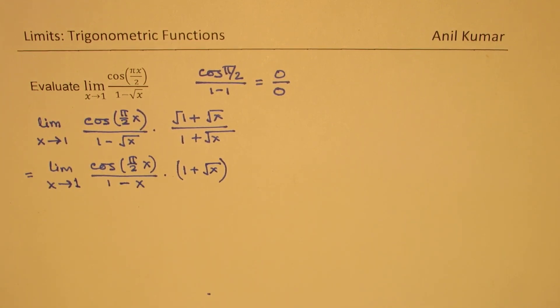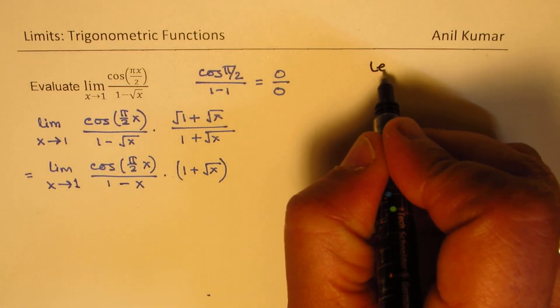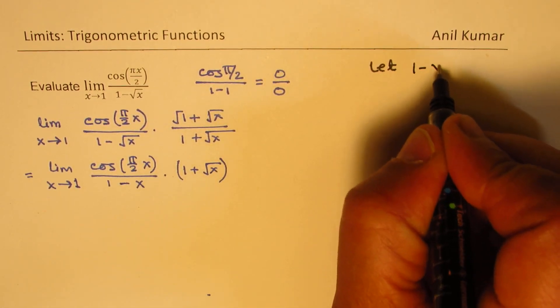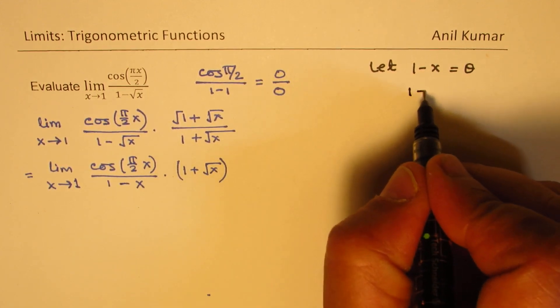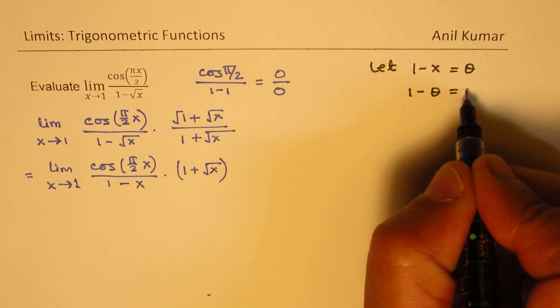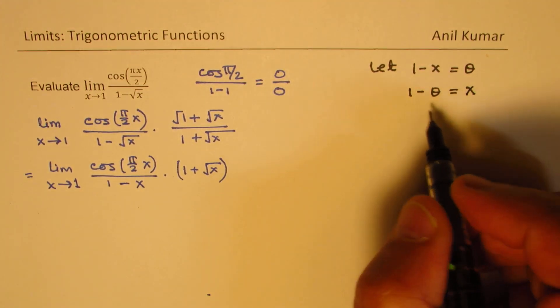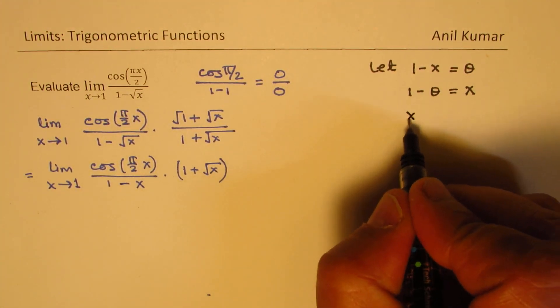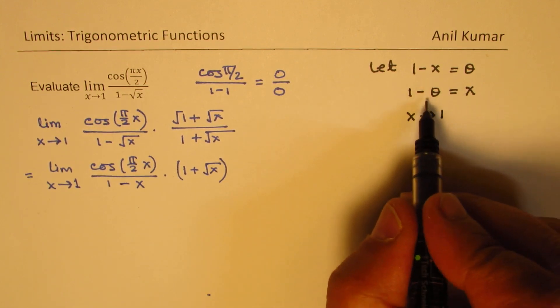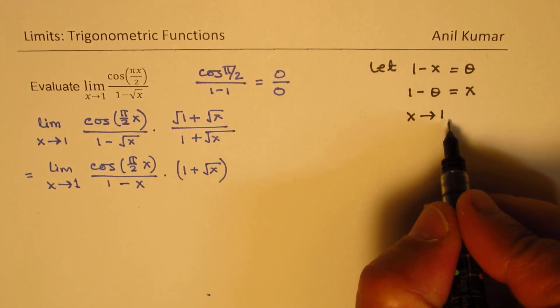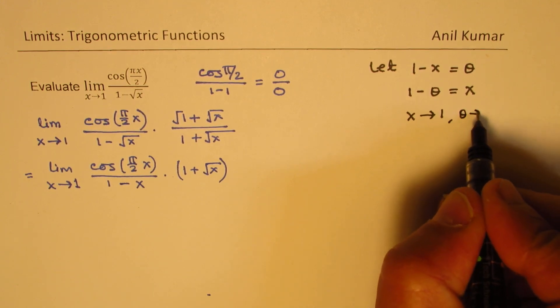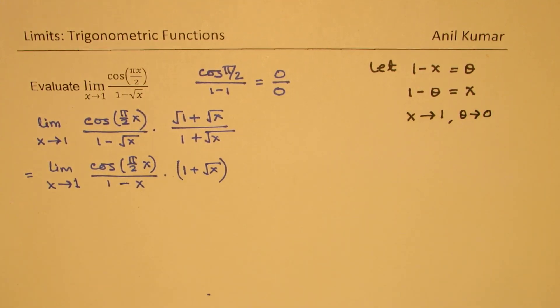So now we'll apply the substitution. Let 1 minus x equal theta. In that case, 1 minus theta will equal x. And as x approaches 1, then theta will approach 0.